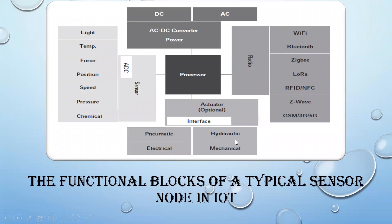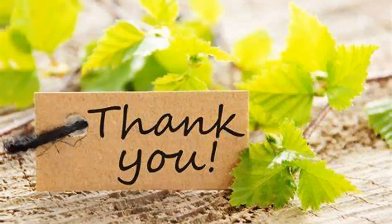Finally, we will look at the functional block of a typical sensor node in IoT. A sensor feeds data to a processor. If it is an analog signal, it is converted to a digital signal via an inbuilt ADC before being sent to the processor. The processor uses communication modules — Wi-Fi, Bluetooth, ZigBee, LoRa — to process and monitor the data. After processing, the data is fed to actuators to perform actions, which can be pneumatic, electrical, mechanical, or hydraulic. A DC/AC power converter feeds power to the processor. This is the typical IoT sensor node. Stay tuned for the next lecture series. Thank you.